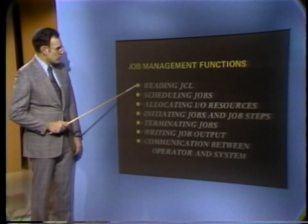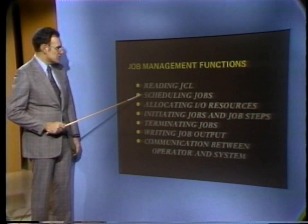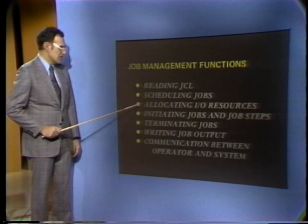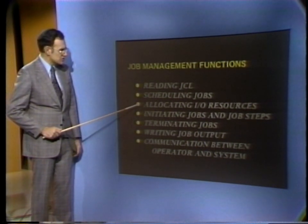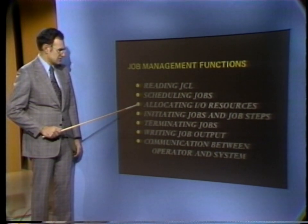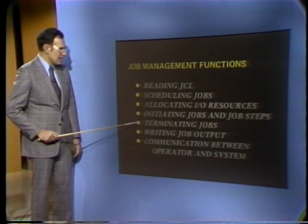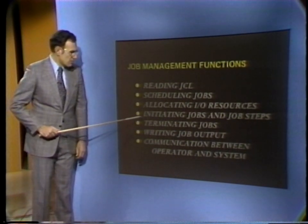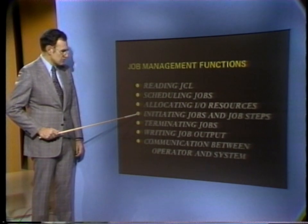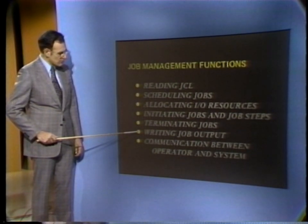Job management is responsible for reading jobs into the system. Scheduling jobs means selecting a job according to its priority for processing. Allocating IO resources involves the assigning of IO units to a program and the setting aside of output space on direct access storage devices. When a program terminates, the resources that were allocated are freed and made available for the use of other programs. By initiating jobs and job steps, we mean requesting the execution of the programs named in those job steps. Job management is also responsible for writing job output independently of the program that produced it.